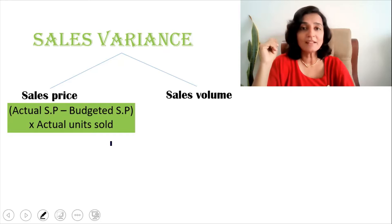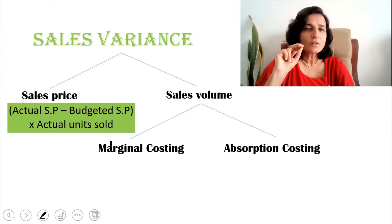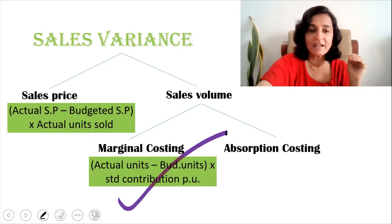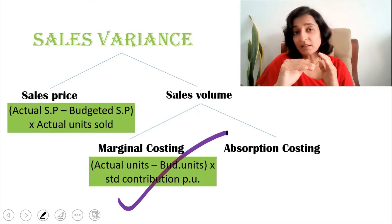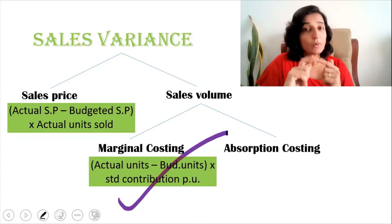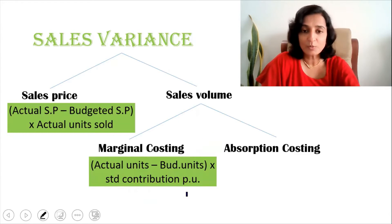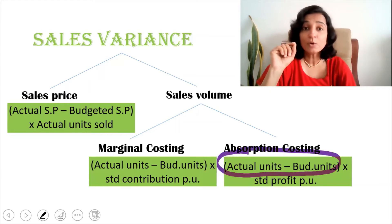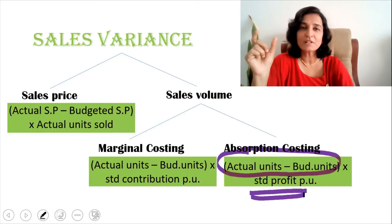For the sales volume variance, there are two methods of accounting: marginal costing and absorption costing, so the formulas are slightly different. In marginal costing, the formula is: actual units minus budgeted units, multiplied by standard contribution per unit — we are finding whether quantity sold is more or less than the budget, multiplied by standard contribution. In absorption costing, it is actual units minus budgeted units multiplied by standard profit per unit.